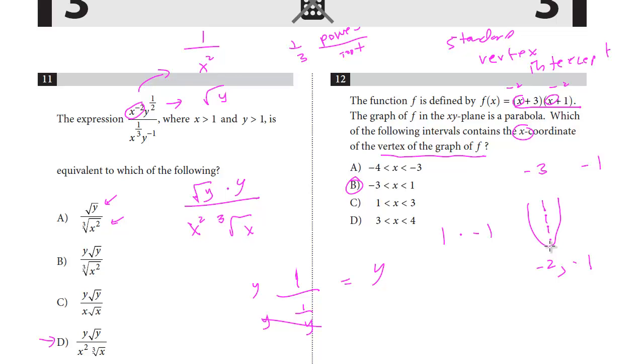And so this point here, the vertex, is negative 2, negative 1. They're only asking for the x. And so the answer, negative 2, this is the range that contains it.